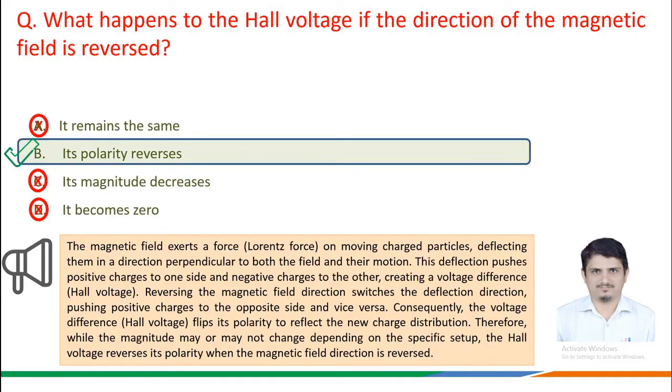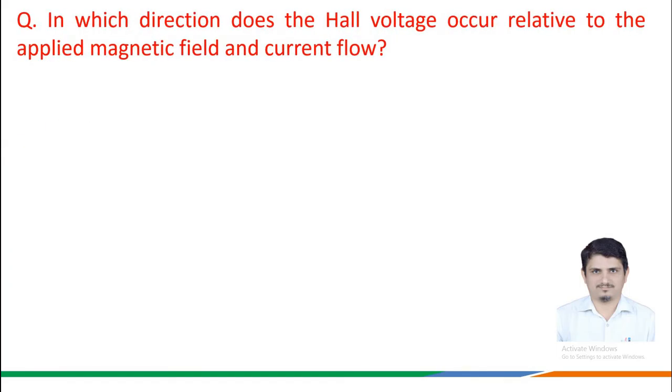While the magnitude may or may not change depending on the specific setup, the Hall voltage reverses its polarity when the magnetic field direction is reversed. The correct answer is Option B.